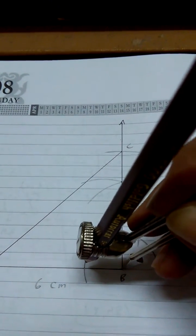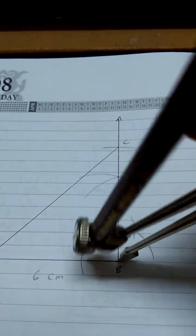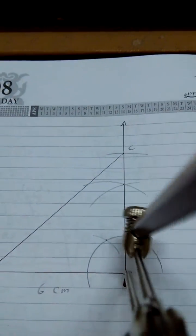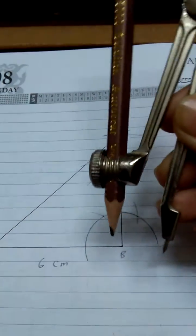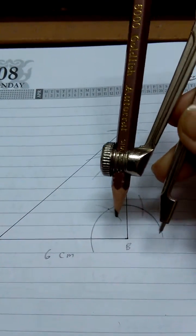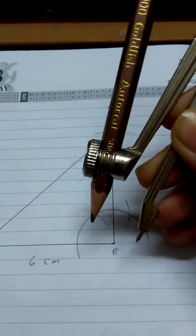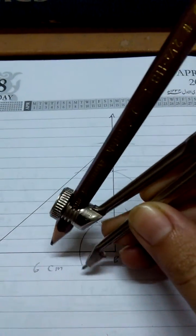Now make sure that this radius of your compass is maintained and does not be changed. You see that this large circle, this arc, has intersected this AB line segment at this point.